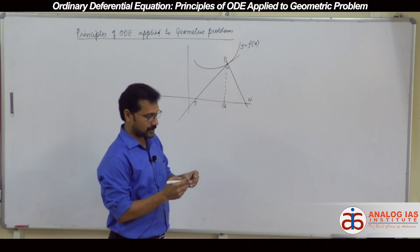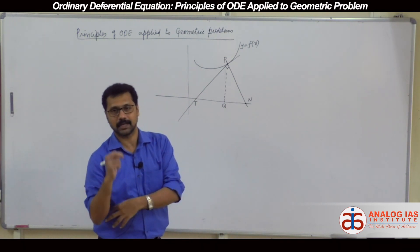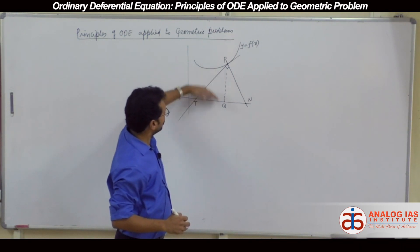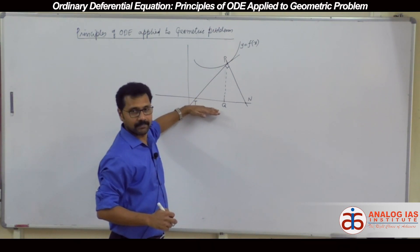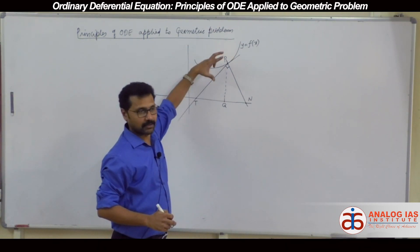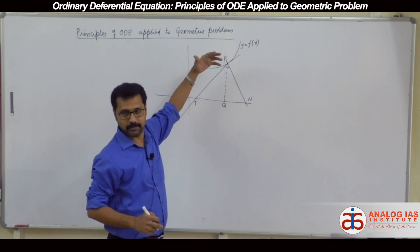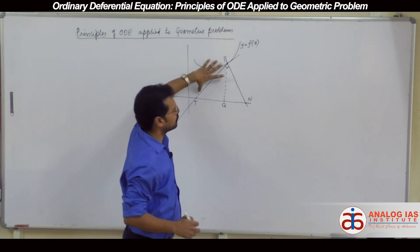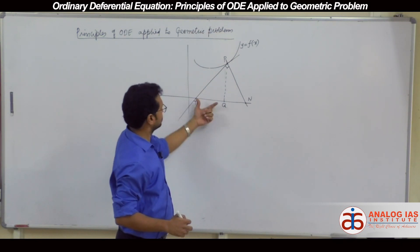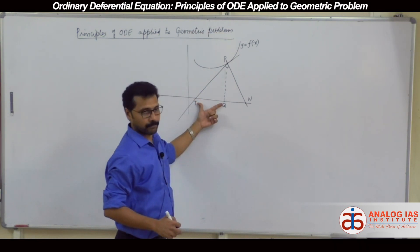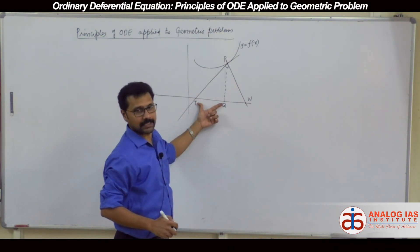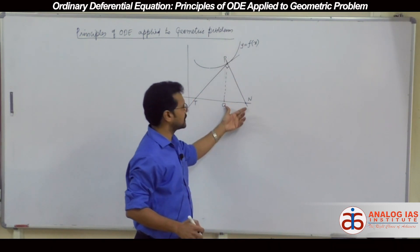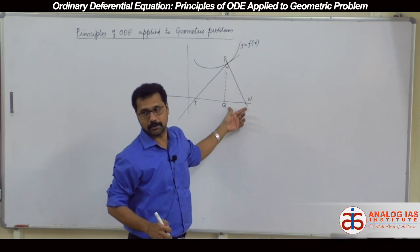In fact, subtangents and subnormals are nothing but the projection of the tangent on the x-axis. Everyone knows what a projection is — suppose from that side if you see this length, its projection on the x-axis would be this length, which is called subtangent. And the projection of the length of normal on the x-axis, we get it as subnormal.